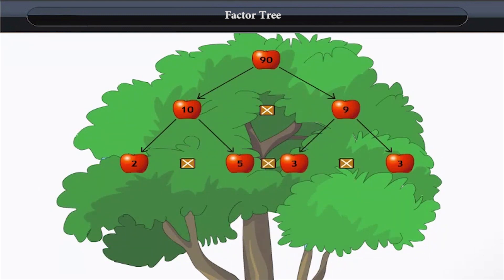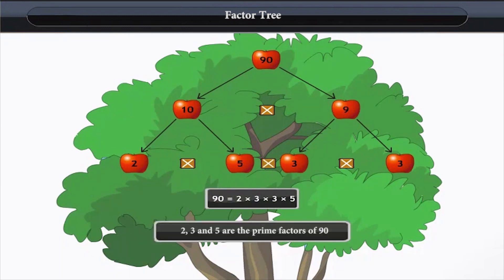Now, write the factors of 9, that is 3 and 3. We obtained our factor tree for the number 90.